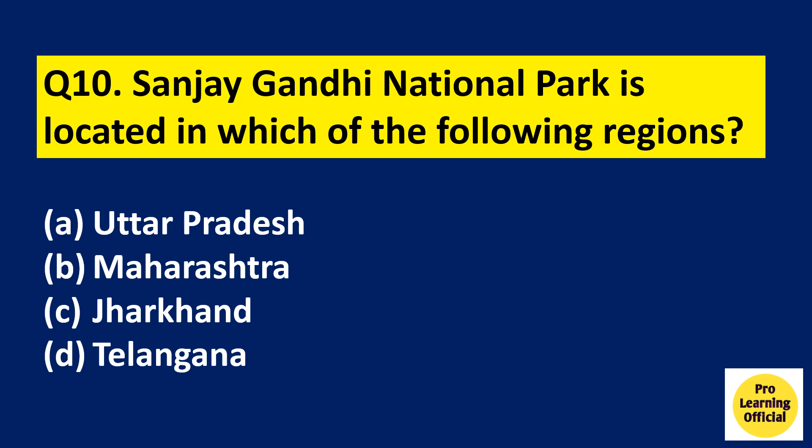Question 10: Sanjay Gandhi National Park is located in which of the following regions? Option A: Uttarakhand. Option B: Maharashtra. Option C: Jharkhand. Option D: Telangana. The right answer is Option B, Maharashtra. Sanjay Gandhi National Park is situated in Maharashtra.